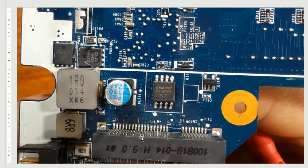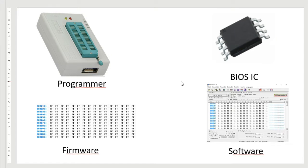What do we need to reprogram the BIOS? There are four major parts. The first is the BIOS IC itself. Sometimes you need to remove the BIOS IC from the motherboard, put it in a specific adapter, and then place it in the programmer.